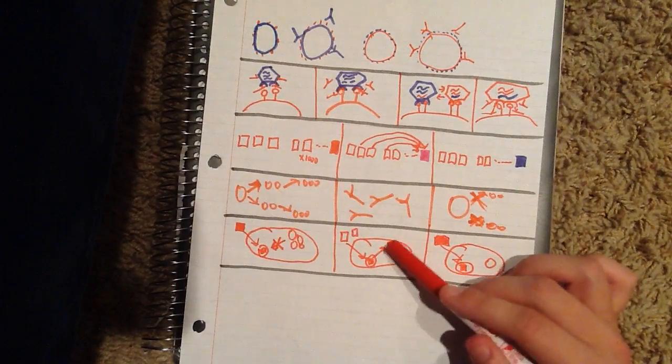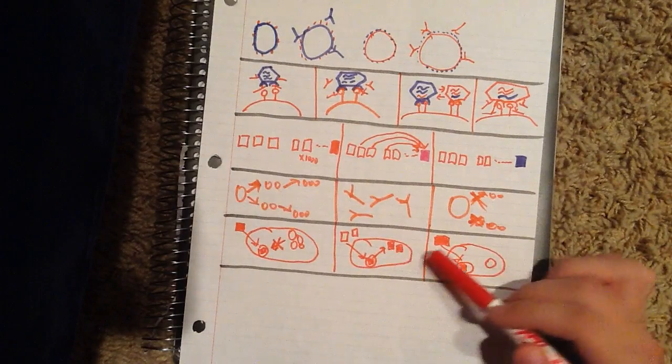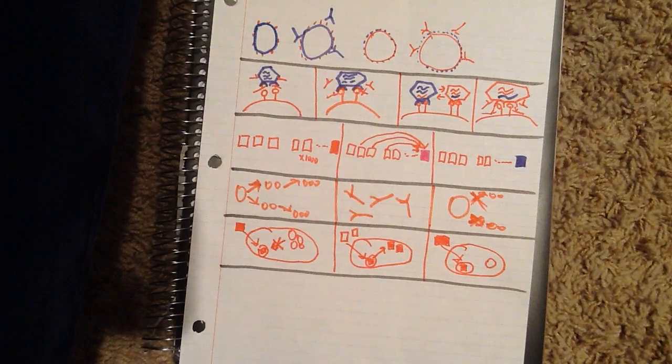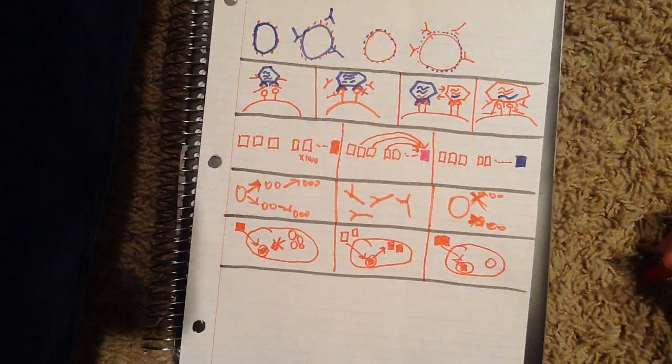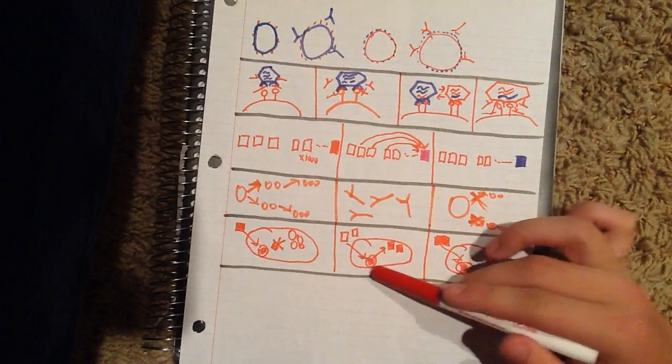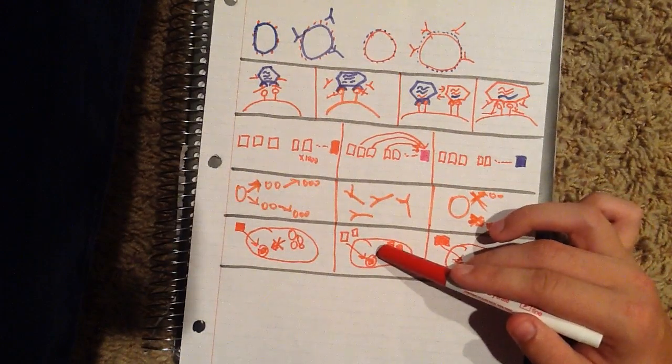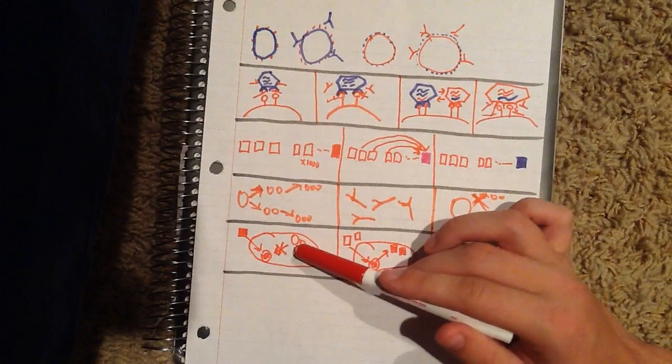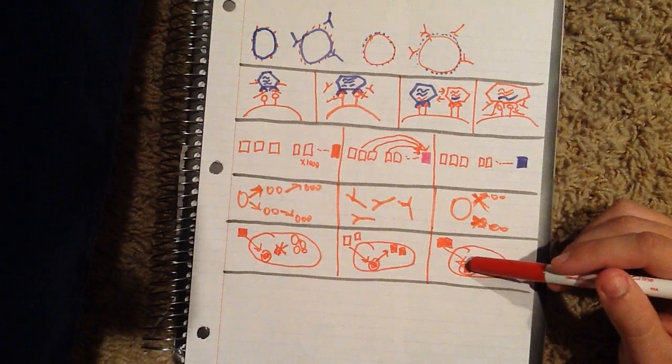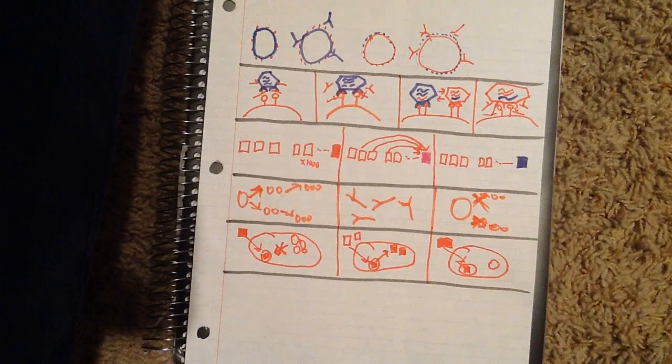The third pathogen that utilizes this strategy is Toxoplasma gondii. Instead of escaping into the cytoplasm or just avoiding lysosomes altogether, it's actually going to create its own vacuole, which will isolate it from the rest of the cell.